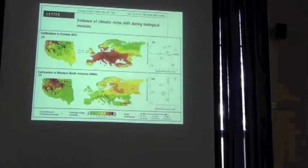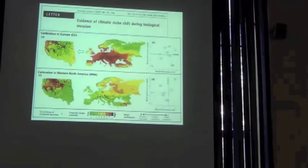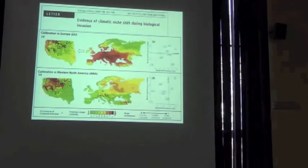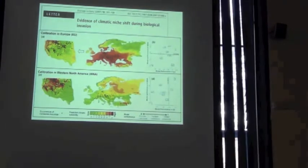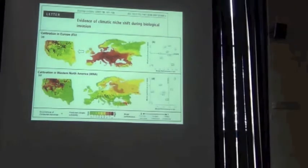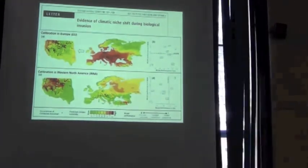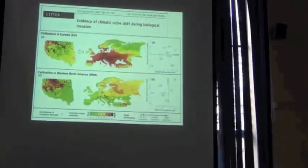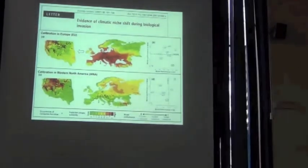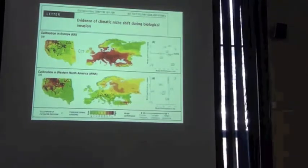Now let's turn it around and let's calibrate it to Western North America. We get this essentially home model. And we project it to Europe. And look at that. The hot areas miss the known native range of the species entirely. And so the argument was that's pretty obviously a niche shift.